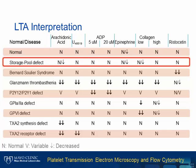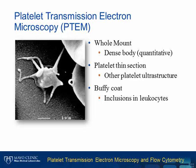Platelet storage pool deficiency is caused by either granule deficiency or defect in granule release. Platelet transmission electron microscopy, or PTEM, is the gold standard for assessing platelet ultrastructures such as dense and alpha granules. There are three main tests: platelet whole-mount TEM to quantify dense granules, platelet thin-section TEM to visualize ultrastructures such as alpha granules and inclusions, and buffy coat TEM to examine aberrant inclusions in white cells.